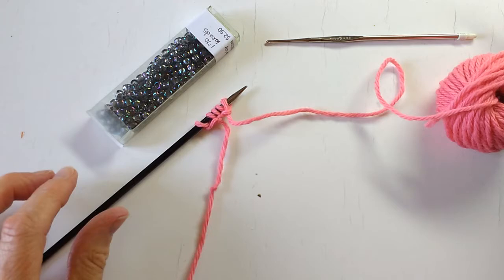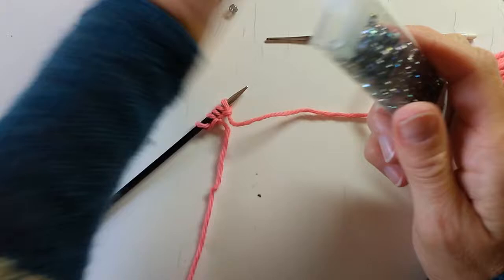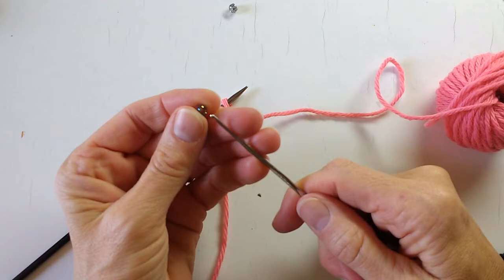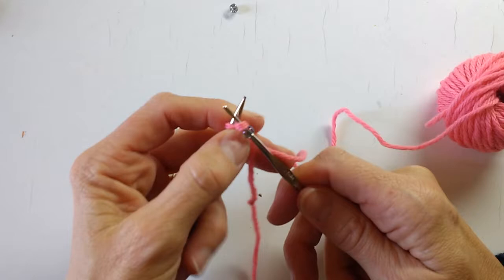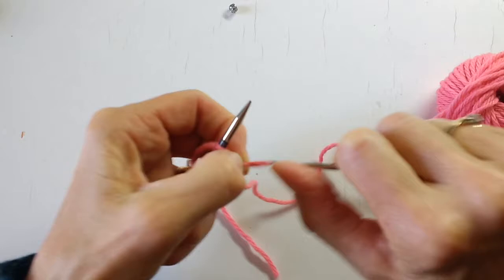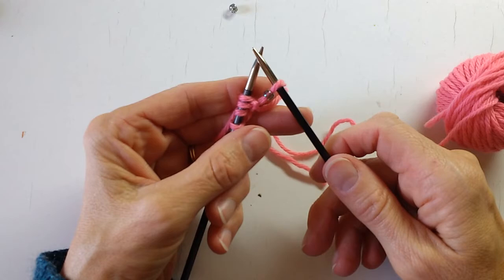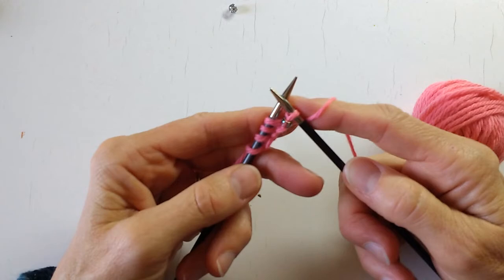Now we need our first bead. Okay, so you take your crochet hook and you place your bead on the hook like that. Now we're going to take the first stitch on the needle and slip it onto the crochet hook and we're going to pull that stitch through the bead. Then we'll place the bead on the right needle.